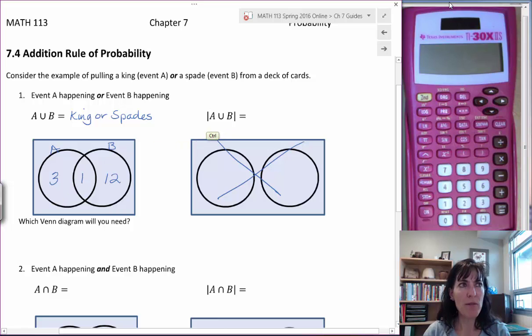So then if I'm trying to find the cardinal number for A union B, and A union B remember is all of these together, I can look at the cardinal number for A plus the cardinal number for B minus the cardinal number for A intersect B. And thinking about it, the cardinal number for A, that was our four kings.